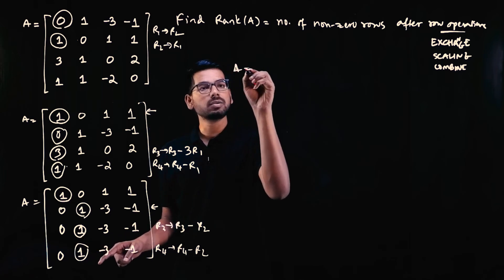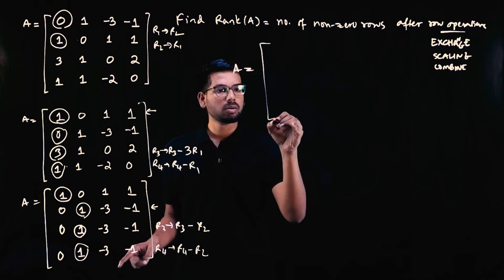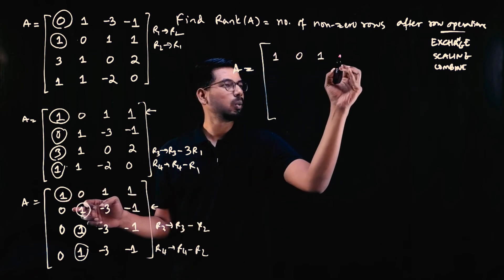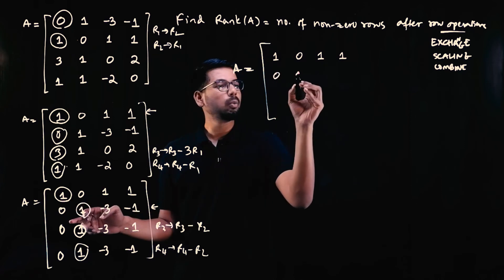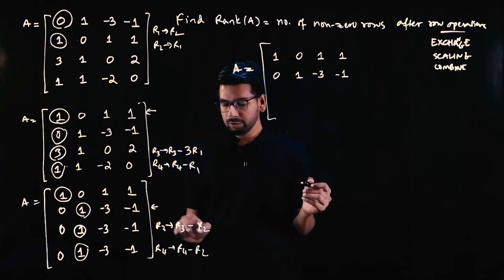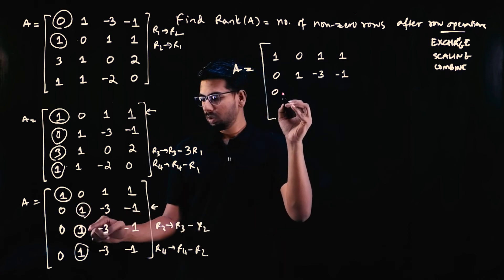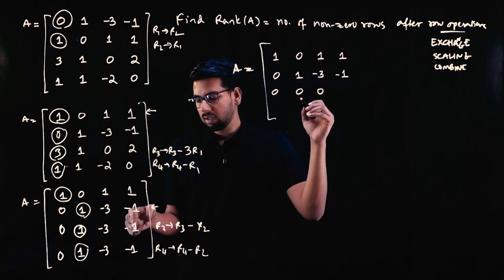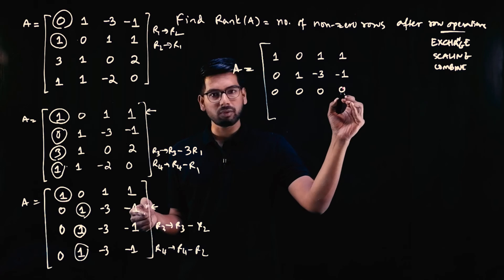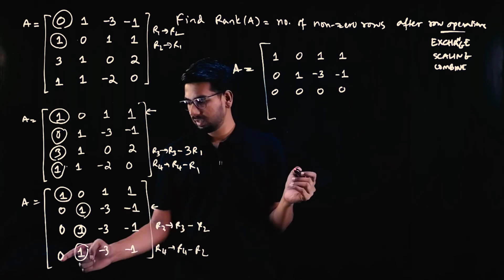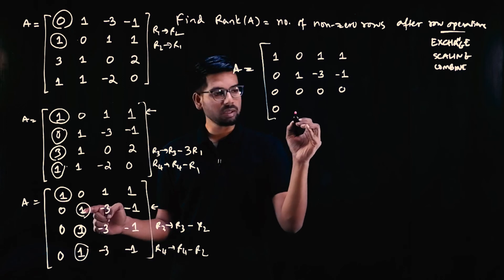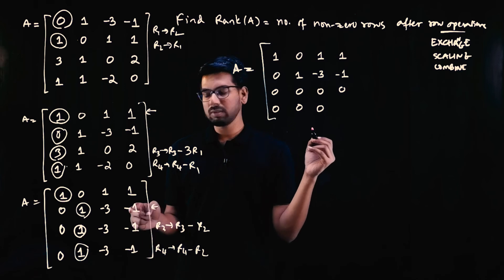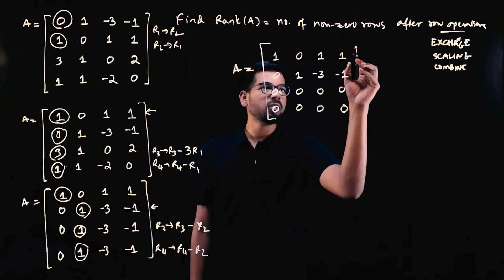After these operations, rows one and two remain unchanged: [1, 0, 1, 1] and [0, 1, −3, −1]. For row three (R3 − R2): 0−0=0, 1−1=0, −3−(−3)=0, −1−(−1)=0. So row three becomes all zeros. Similarly for row four (R4 − R2): 0−0=0, 1−1=0, −3+3=0, −1+1=0. Row four is also all zeros.